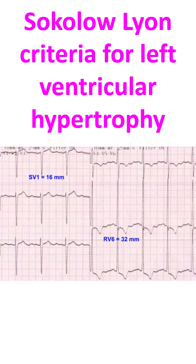Obese individuals have voltages lower in spite of presence of left ventricular hypertrophy. In thin individuals, voltage can be higher even in the absence of left ventricular hypertrophy. And lower voltages in chest leads can also occur in the presence of pulmonary emphysema. So these are the important limitations of the Sokolov-Lyand voltage criteria for left ventricular hypertrophy.